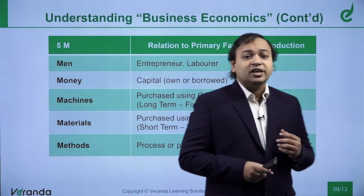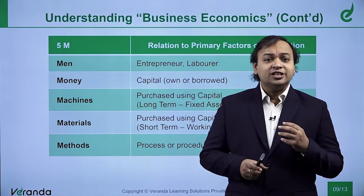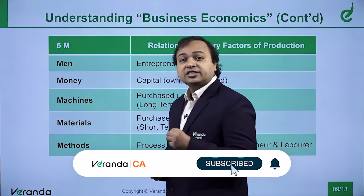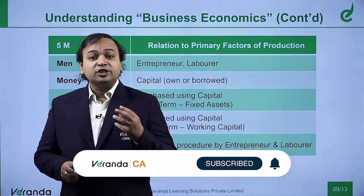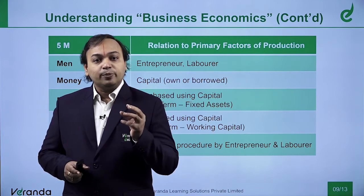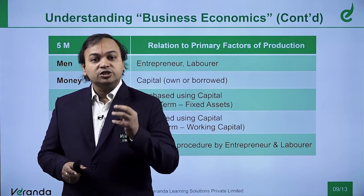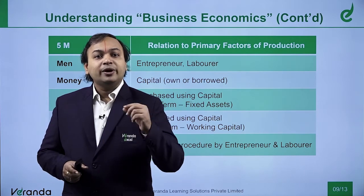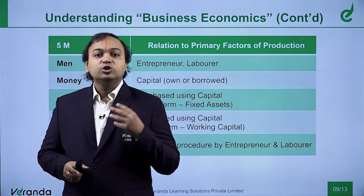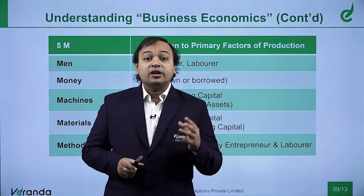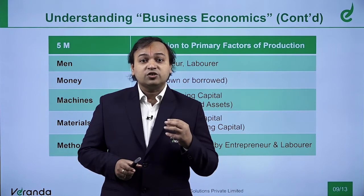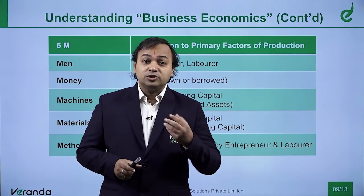The final M is methods — the process or procedure by which a particular activity has to be performed, either by the entrepreneur or by the laborer. Any methods or procedures you decide or instruct have to be done by men — which in our factors of production means the entrepreneur and the laborer. The 5Ms concept helps us understand the factors of production, which are the primary factors that help us run the business, earn profit, and thereby generate wealth.